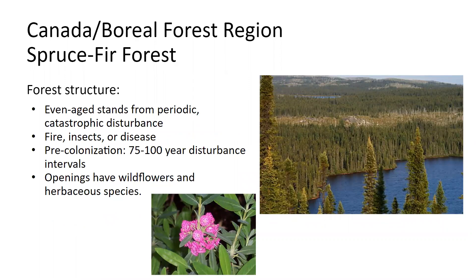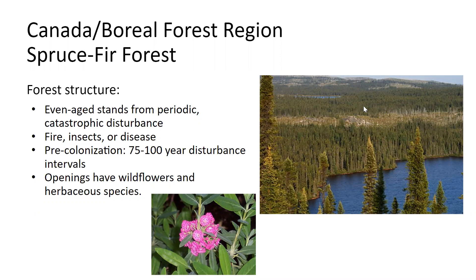Looking at forest structure: if you look at the photo on the right, it's a very even-aged stand. These are forests that regenerate after a catastrophic disturbance — fire, insects, or disease that wipes out sections of forest. You can see a big section that appears to be insect damage, but it will regenerate. Before colonization, the disturbance interval was thought to be 75 to 100 years — compare that to the 100 to 300 years common for New England.